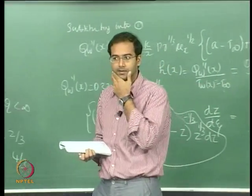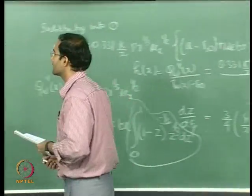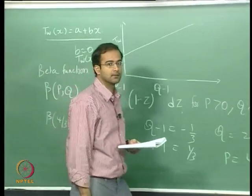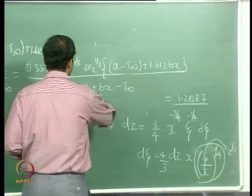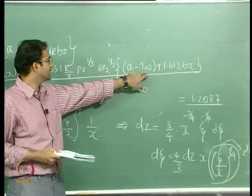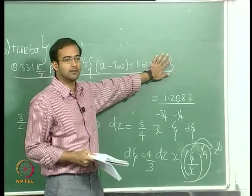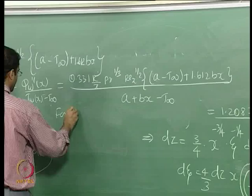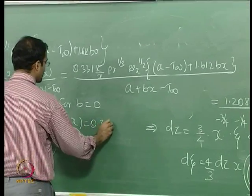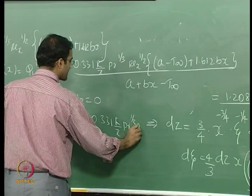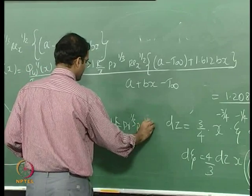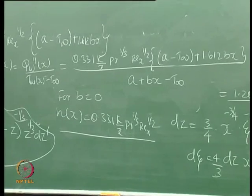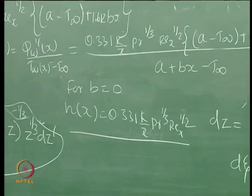For the limiting case where B = 0, this gives a uniform wall temperature. The B terms vanish, the (a − T∞) terms cancel, and we recover the standard constant wall temperature result: h = 0.331(k/x) PR^(1/3) Re_x^(1/2). This confirms the approach is consistent.